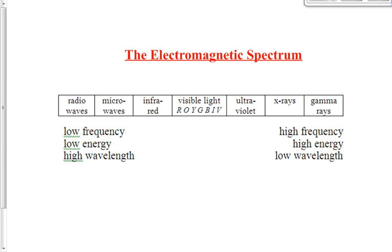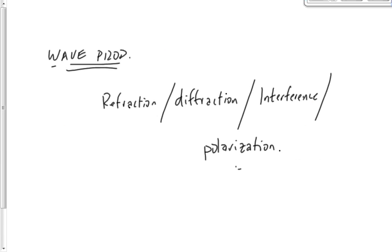We watched a video on Thursday covering this material. Before showing it again, let's recall the seven types of EMR in order: radio waves, microwaves, infrared, visible light, ultraviolet, X-rays, and gamma rays.